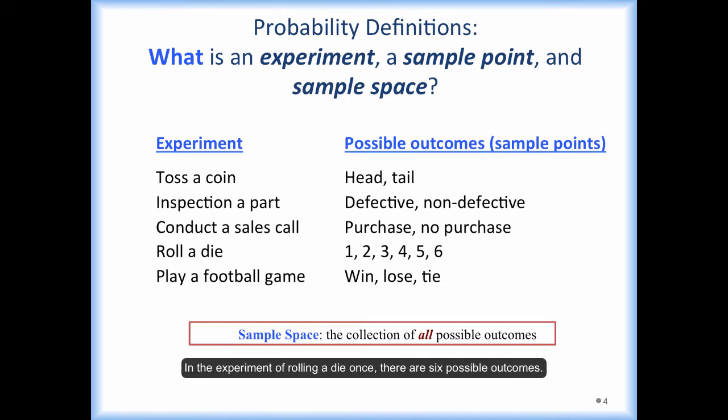Here are some examples in this slide. In the experiment of rolling a die once, there are 6 possible outcomes: 1, 2, 3, 4, 5, and 6. These 6 outcomes form the sample space.